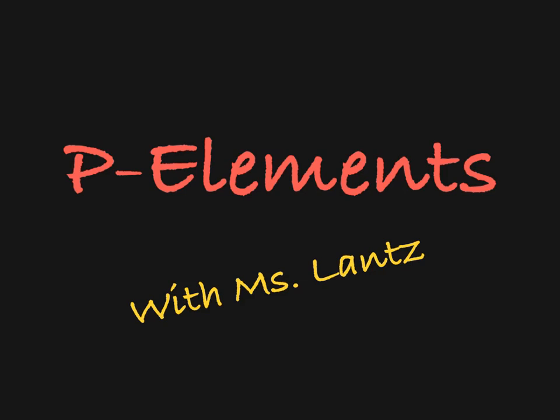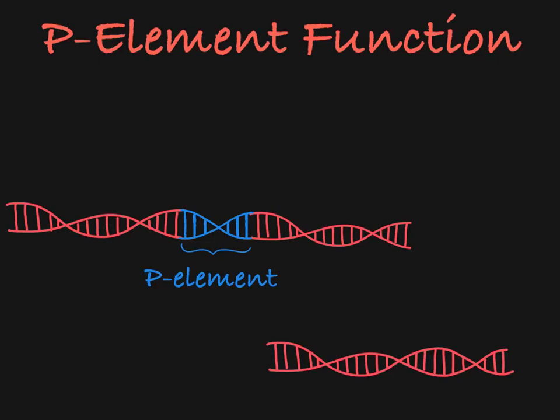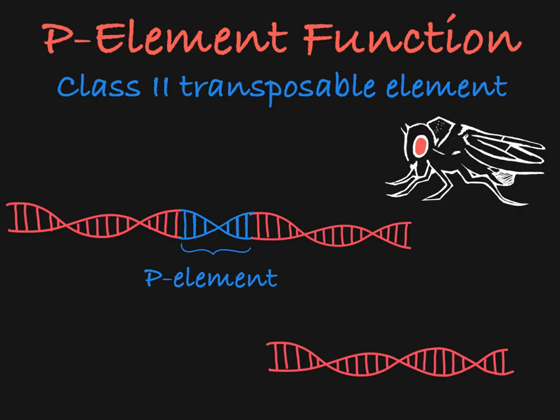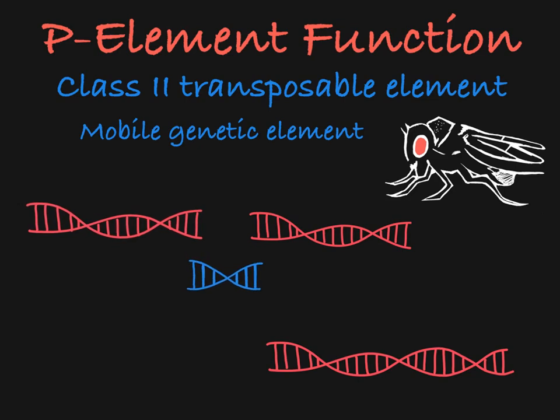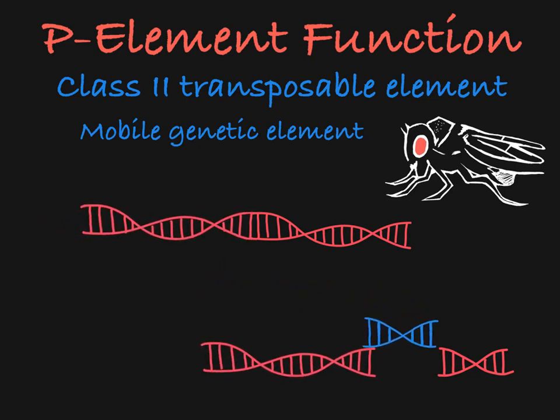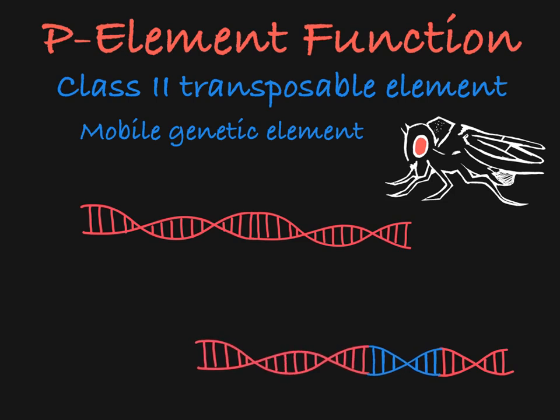In this video, I will introduce the concept of P elements. A P element is a Class II transposable element found in the genome of Drosophila, which is commonly called the fruit fly. A Class II transposable element is a DNA-based mobile genetic element that moves with a cut-and-paste mechanism using only DNA intermediates. This piece of DNA has the capability of jumping from one location in the DNA to another.